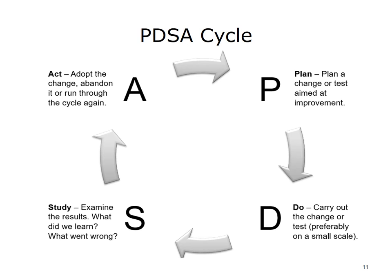Edward Deming derived what became known as the Deming Wheel, Deming Cycle, or Deming Circle from Walter Shewhart's 1939 straight-line, three-step scientific process of specification, production, and inspection. Deming presented it as a circle to stress the importance of constant interaction among the four steps of design, production, sales, and research. The PDCA — Plan-Do-Check-Act — cycle is often attributed to Deming and Shewhart, but Deming denied this connection. In 1993, Deming presented an evolved version as the Shewhart cycle for learning and improvement, calling it the PDSA — Plan-Do-Study-Act — cycle. Moen, 2011.